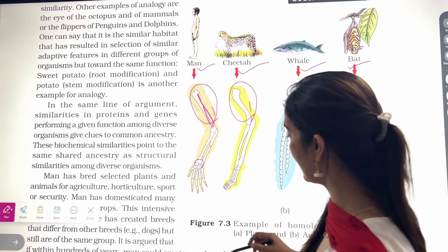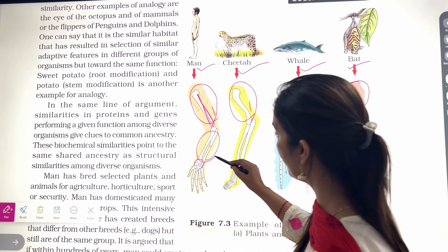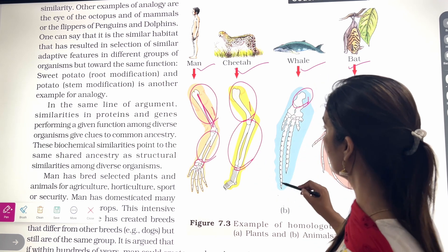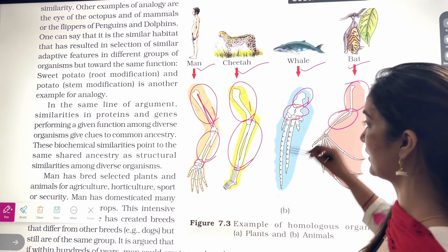And then the radius and ulna bones, these bones are two. Man has two, cheetah is having two, whale is having two, and bat is having two.